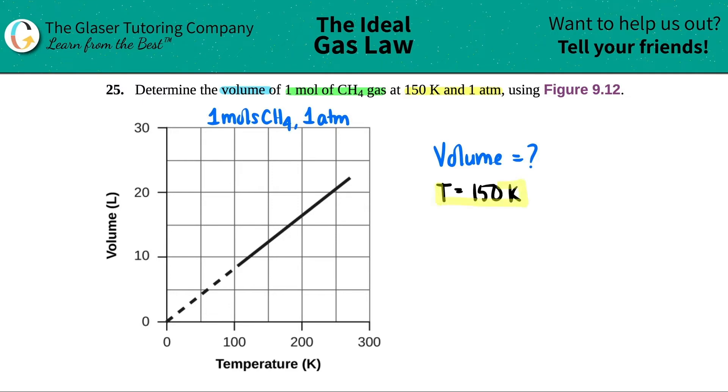So I'm going to use this information to see what my volume is. Here's the temperature. The temperature is the X. I need to find out where 150 is. So between 100 and 200, right here is 150. So I have to go up to where that reaches on the graph.